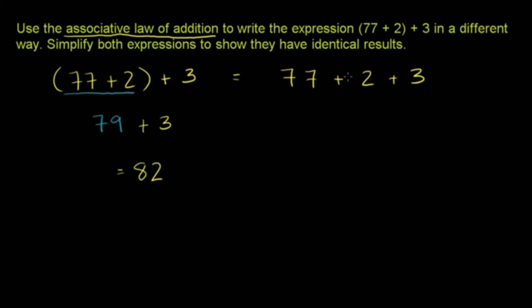you know what? I could do 77 plus 2 plus 3. I could add this first and then add it to 77. And it's going to be the exact same thing as if I add these two guys first and then add the 3. And let's verify that for ourselves.